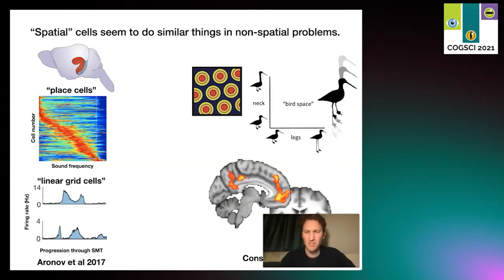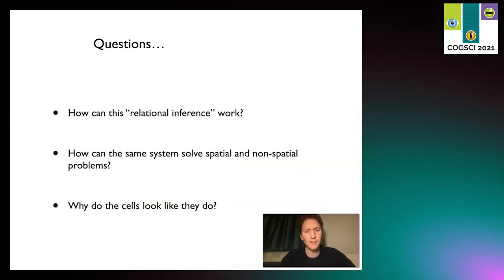they'll see activity characteristic of hexadirectional activity of grid cells found in entorhinal cortex and medial prefrontal cortex. This is really quite interesting because these are all non-spatial problems but they're coded as if they were spatial. This leads us to a few questions: how does relational inference work, how is the same system performing both spatial and non-spatial problems, and why do the cells look the way they do?